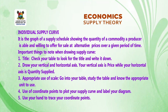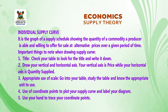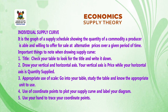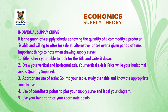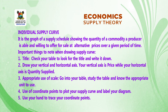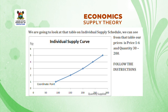Individual supply curve: It is the graph of a supply schedule showing the quantity of a commodity a producer is able and willing to offer for sale at alternative prices over a given period of time. Important things to note when drawing a supply curve: one, title — check your table for the title and write it down; two, draw your vertical and horizontal axes — the vertical axis is price while the horizontal axis is quantity supplied; three, appropriate use of scale.